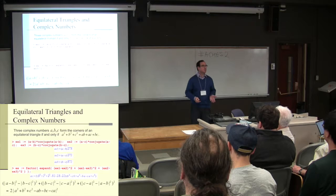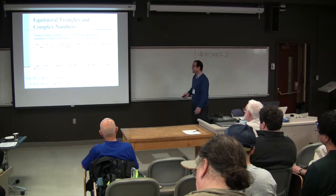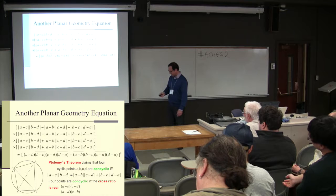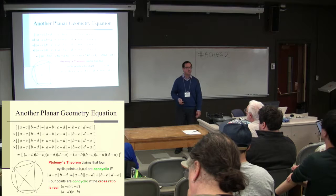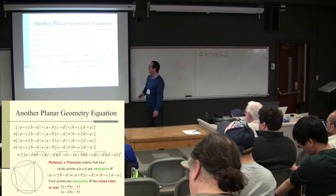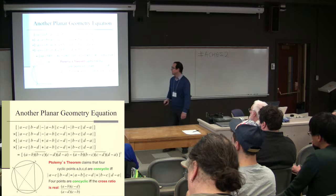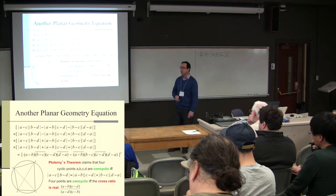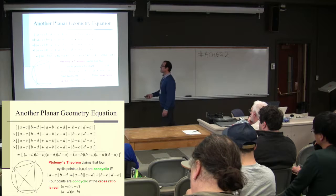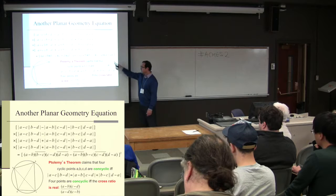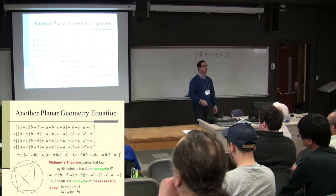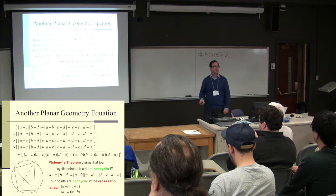The computer is using algebraic properties to essentially prove for us. Here's another example: the classical Ptolemy's theorem, which says four points in the plane are concyclic if and only if a certain property holds. Another characterization is that points are concyclic if the cross ratio is real. Doing something similar, one equation proves the equivalence of these two characterizations for four points being concyclic. Again, Maple is doing a lot of the work — the geometric property is being encoded in an algebraic expression.